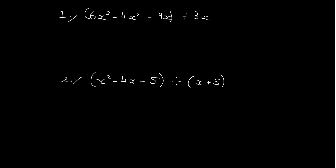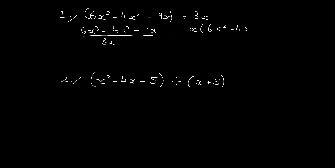So we're going to divide 6x cubed minus 4x squared minus 9x by 3x. So let's do it. What I'm going to do is I'm just going to write it as a fraction and I'll have 6x cubed minus 4x squared minus 9x over the top of 3x. I'll factorize x out of the top and I've got x outside of 6x squared minus 4x minus 9 all over 3x.